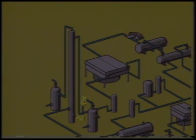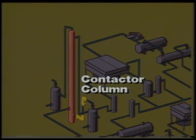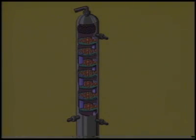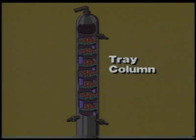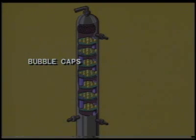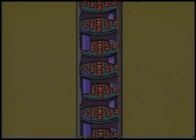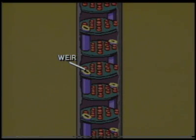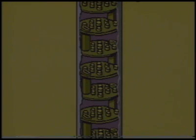From the separator, sour gas flows to a contactor column where it comes in contact with the lean amine solution. The most common type of contactor column is called a tray column. There are usually 20 trays in the column with bubble caps on each tray for good liquid-gas contact. The liquid level is maintained on each tray by a weir on the downcomer. The number of trays in the column helps determine the degree of sweetening.